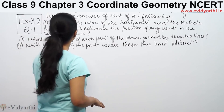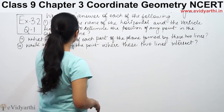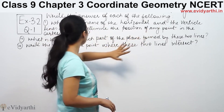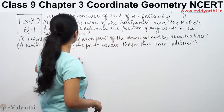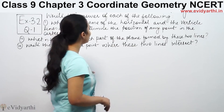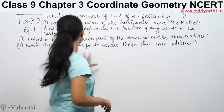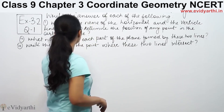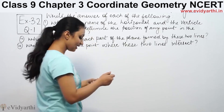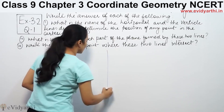What is the name of the horizontal and vertical lines drawn to determine the position of any point in the Cartesian plane? Then, what is the name of each part of the plane formed by these lines? Then, write the name of the point where these two lines intersect. The most important thing is our coordinate axis.